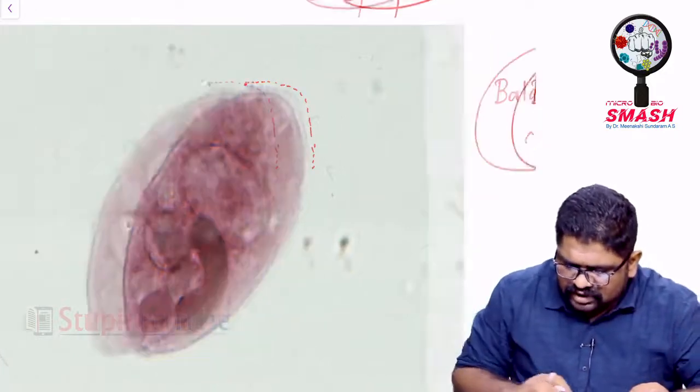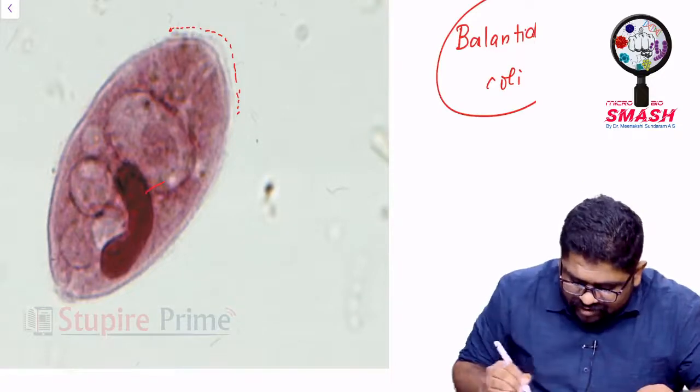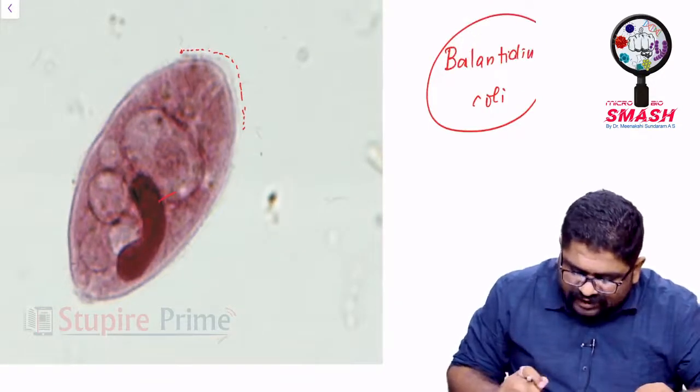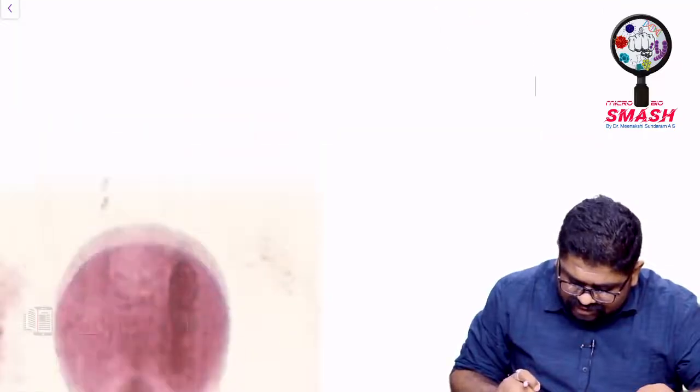Generally cilia is very short compared to that of a flagella, and it will have a very huge nucleus. That nucleus can actually remain the same size even if the trophozoite gets converted into a cyst.